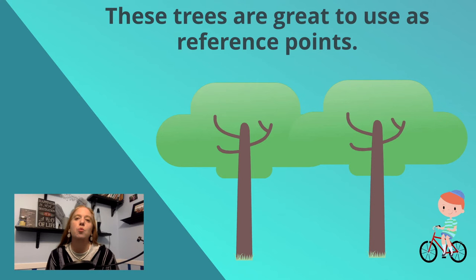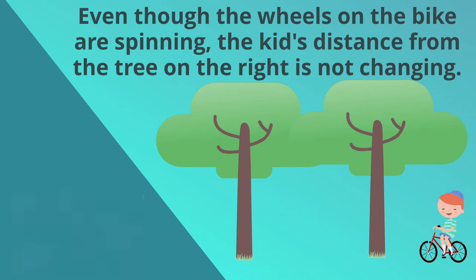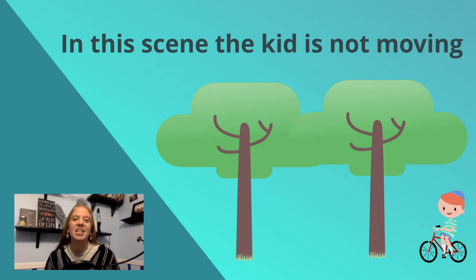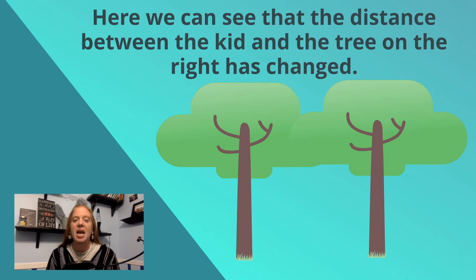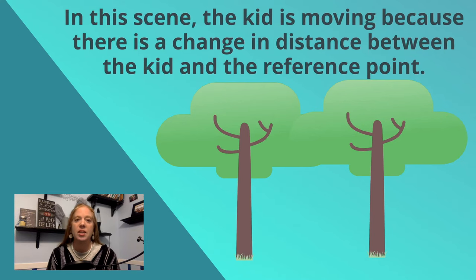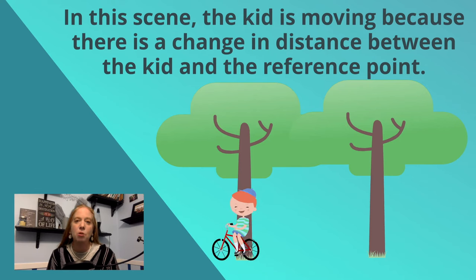These trees are great to use as reference points. Even though the wheels on the bike are spinning, the kid's distance from the tree on the right is not changing. In this scene, the kid is not moving. Here we can see that the distance between the kid and the tree on the right has changed. In this scene, the kid is moving because there is a change in distance between the kid and the reference point.